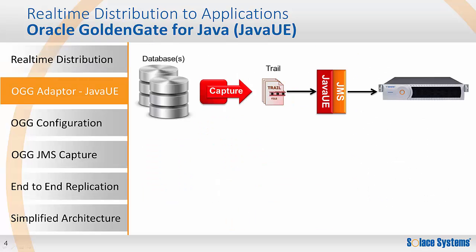The SOLUS integration uses the Oracle GoldenGate application adapter for Java, which enables the delivery of database events to the SOLUS message broker via JMS. Let's trace a database event through the system. When a transaction is committed at the database, the event is handled by the GoldenGate capture extract and written to the GoldenGate trail file in the normal way. Then, instead of the data pump, the GoldenGate Java user exit, or Java UE, reads the trail file and delivers events to the JMS plugin handler.